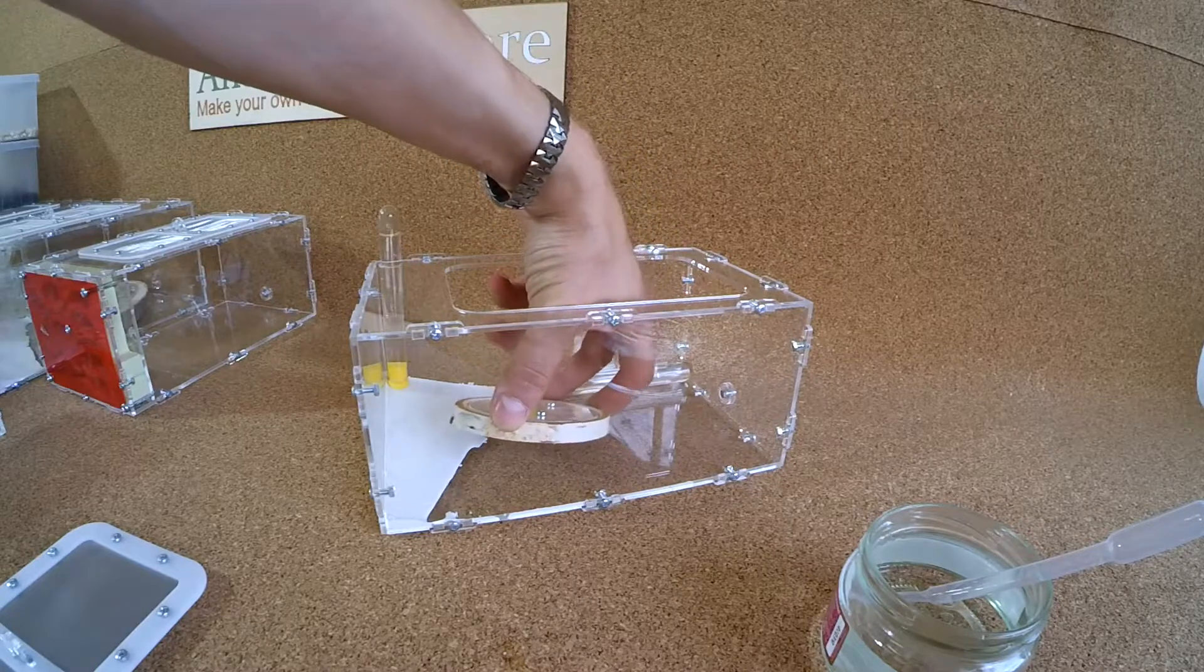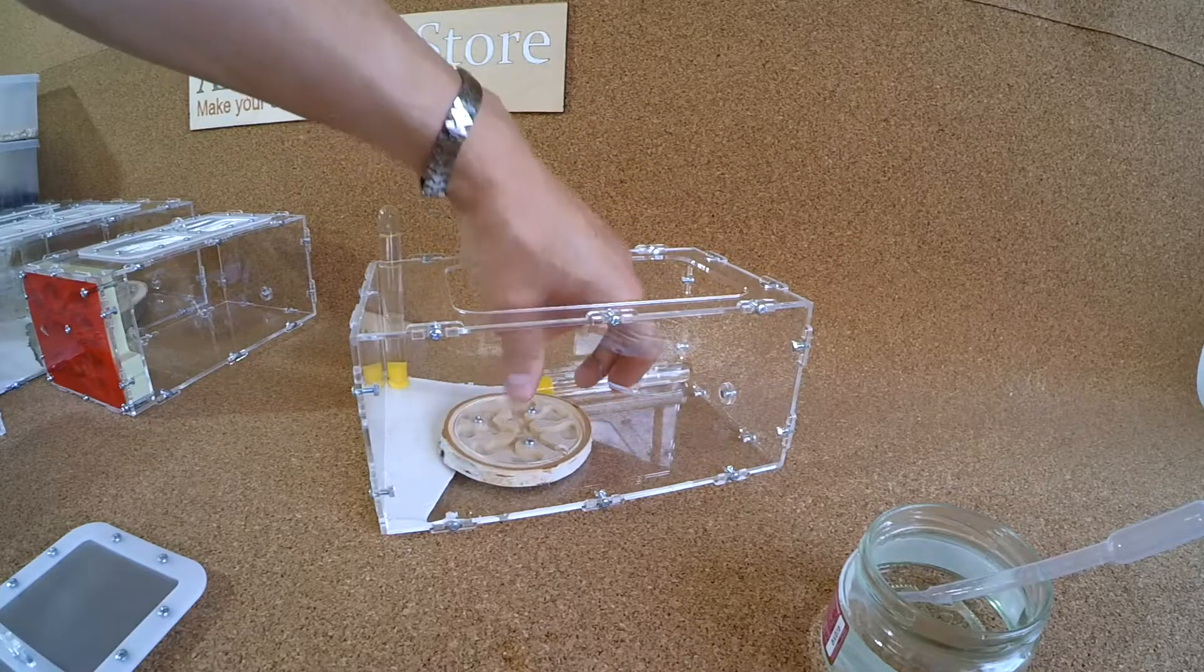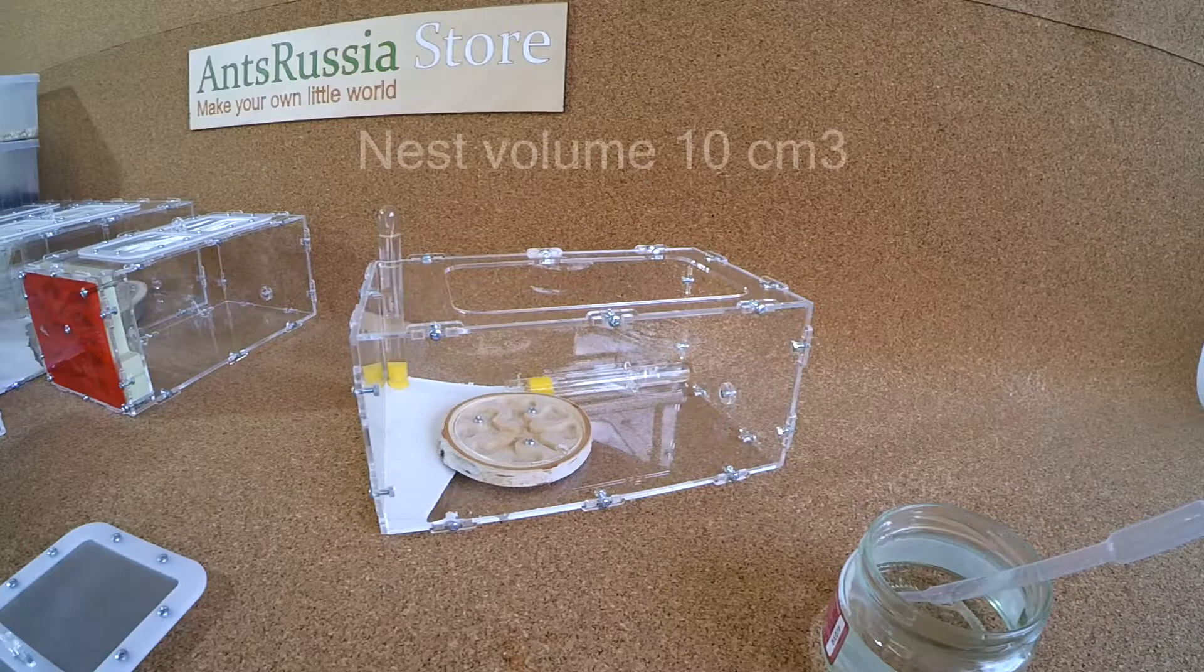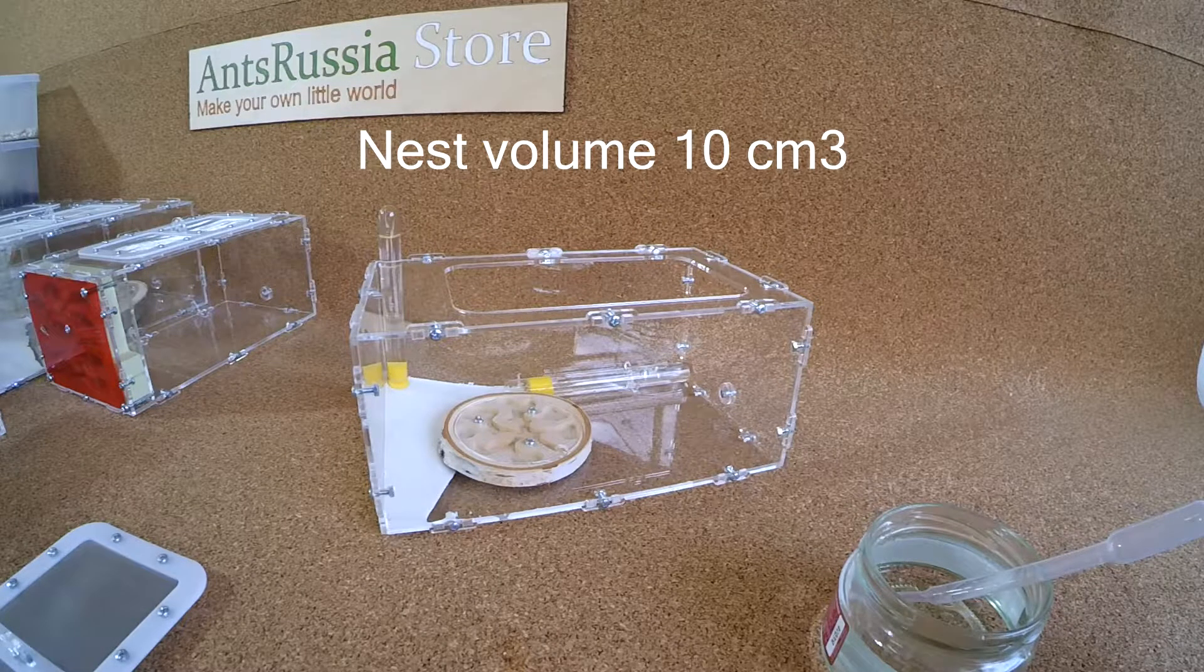Formicarium with a wooden nest is designed to contain ants of the genus Camponotus. Overall volume of sections is 10 cubic centimeters.